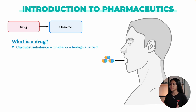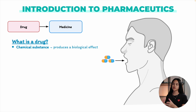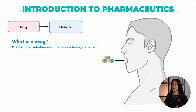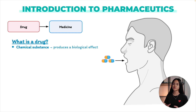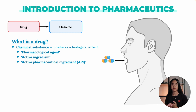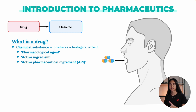A drug is defined as a chemical substance used to manage or treat diseases in plants, animals, and humans. It's an external chemical that, when introduced into the body, produces a physiological effect or alters bodily functions. In the pharmaceutical industry, to avoid ambiguity, we use alternative terms such as pharmacological agent, active ingredient, or active pharmaceutical ingredient (API).